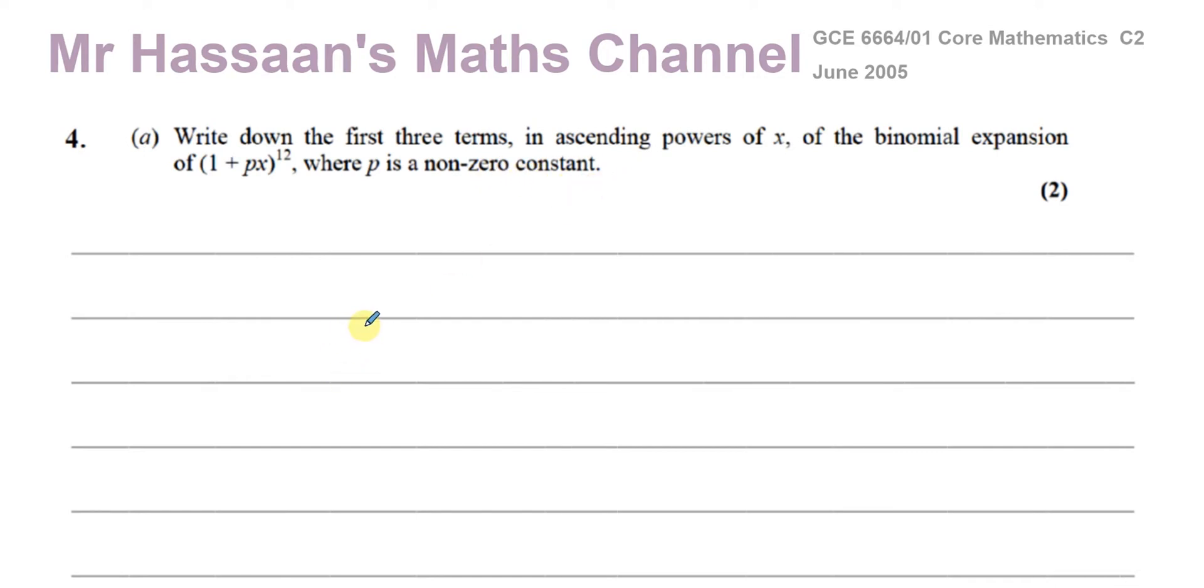So here we got to use binomial expansion. And in order to do that, we can use what's called the NCR method. There's different methods we could use for this, but most people at this stage prefer to use the NCR method, which is perfectly fine.